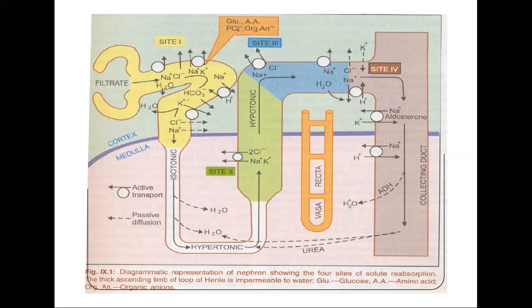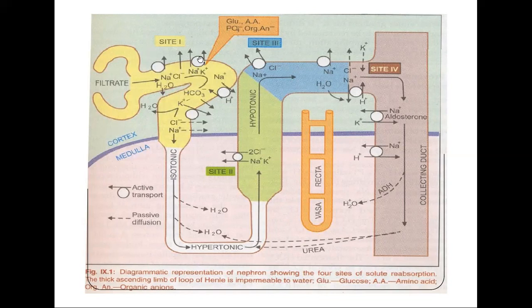This is called the DCT or distal convoluted tubule, which is followed by the collecting duct. Site 4 is present in this area. The diagram shows how sodium, chloride, or water is exchanged. Where there is a circle and straight arrow, there is active transport; where there is a dotted arrow, there is passive diffusion.